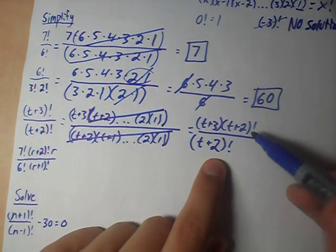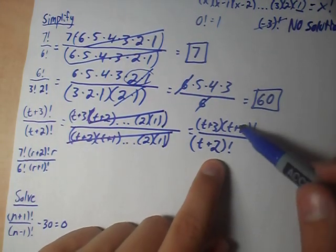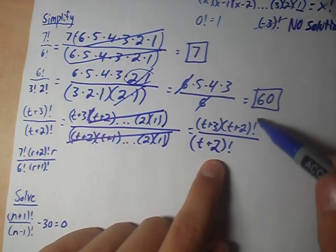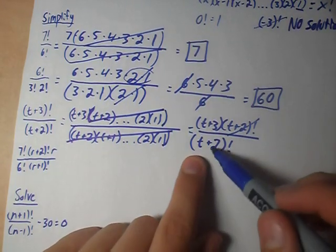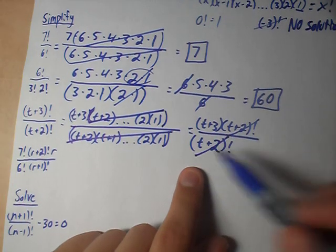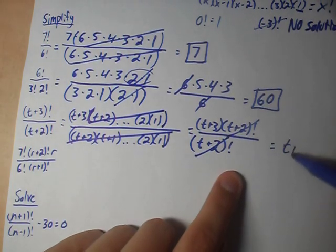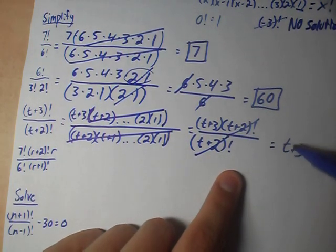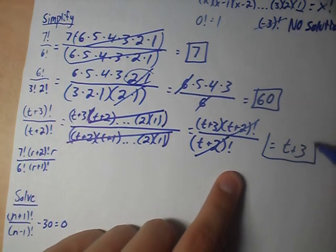If we look at it this way, we've got (T+2) factorial on the top and (T+2) factorial on the bottom. So either way, we're left with T+3.